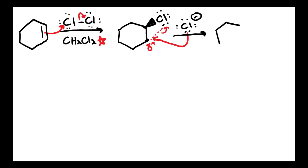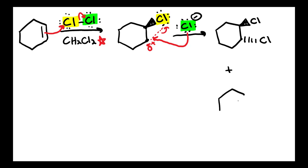The second chlorine that attacks has to come from behind. A wedge means that something is sticking out toward you, so that yellow chlorine is coming out of the screen toward you. That means the green chlorine is not going to want to come from the top of the screen — he's going to want to come from behind the back of the screen so that there's more space and less crowding. So the first chlorine adds on a wedge, and that means the second one is going to add on a dash. But there was really no reason that the first chlorine added on a wedge — it could have also added on a dash. So we also need to show the other product: if the first chlorine added on a dash, that would mean the back face would be crowded, so the second chlorine would end up adding on a wedge.